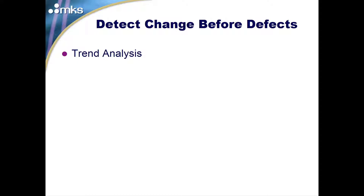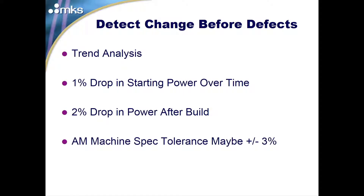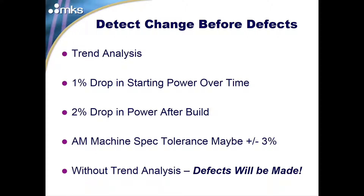Detect the change before you make defects. Trend analysis showed a 1% drop in starting power and a 2% drop after the build. The AM machine spec is plus or minus 3%, so we're still within spec — but if left undetected, we will make defects. This approach allows you to track the health and well-being of that laser before the process actually produces defects. Defects are expensive, especially in powder bed applications where a build may take hours or even days to complete.